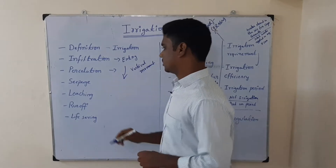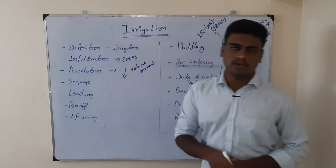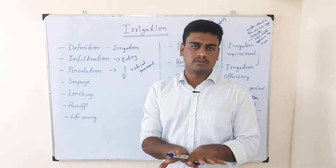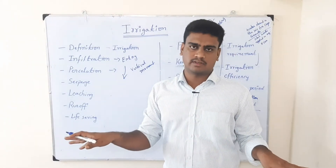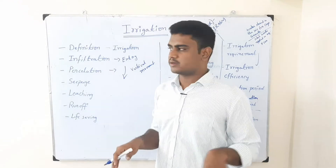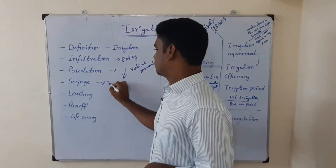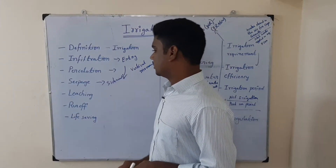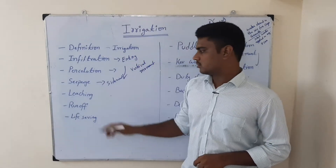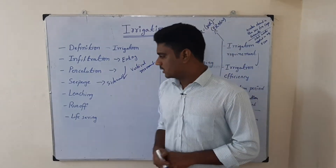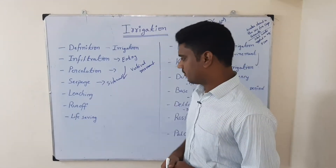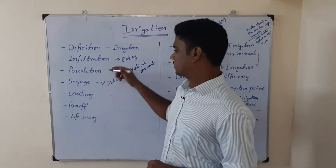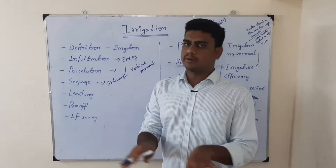Once water enters into the soil, it will start a vertical movement downward — that we call percolation. So vertical or downward movement of water is called percolation. Not only that — once water enters into the soil, it will also move sidewards. That sideward movement of water is called seepage.